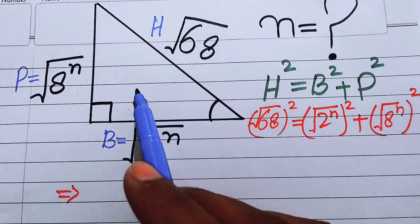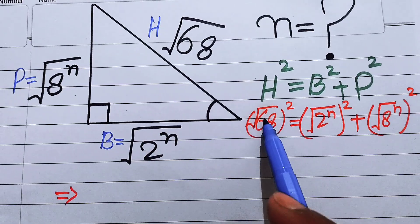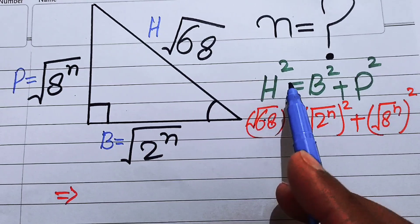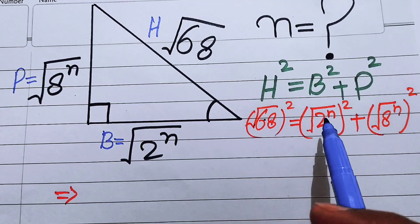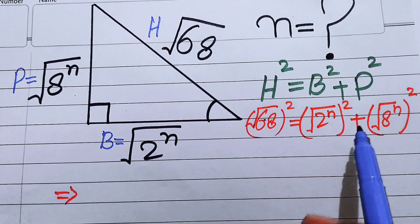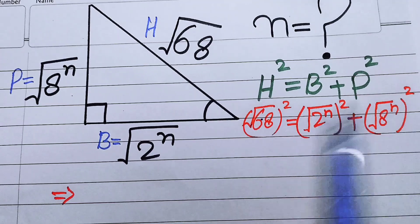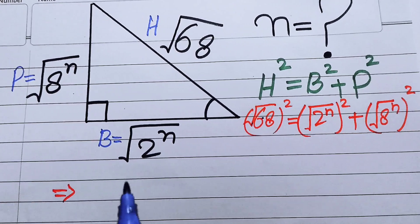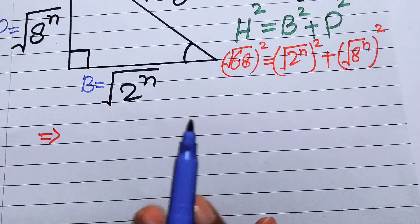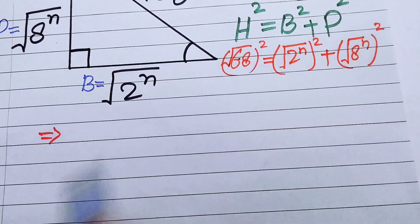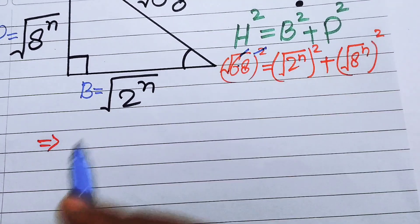Focusing on this diagram, our hypotenuse is the square root of 68 (whole squared), the base is the square root of 2 to the power of n (whole squared), and the perpendicular is the square root of 8 to the power of n (whole squared). We now move forward and solve this equation to find the value of n.